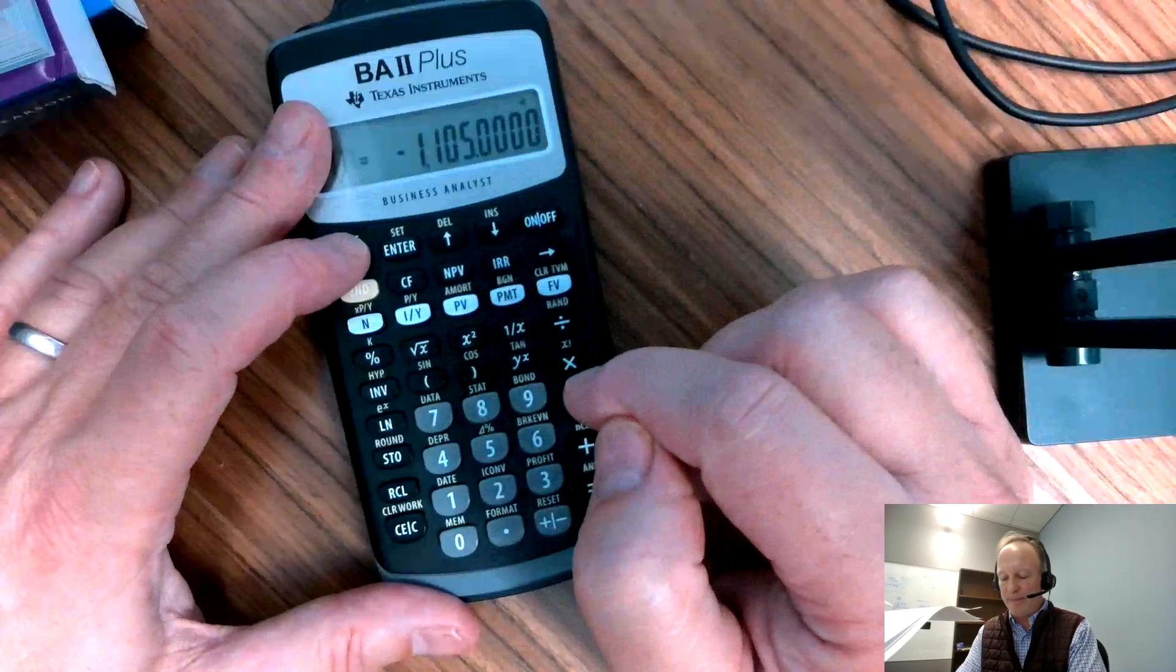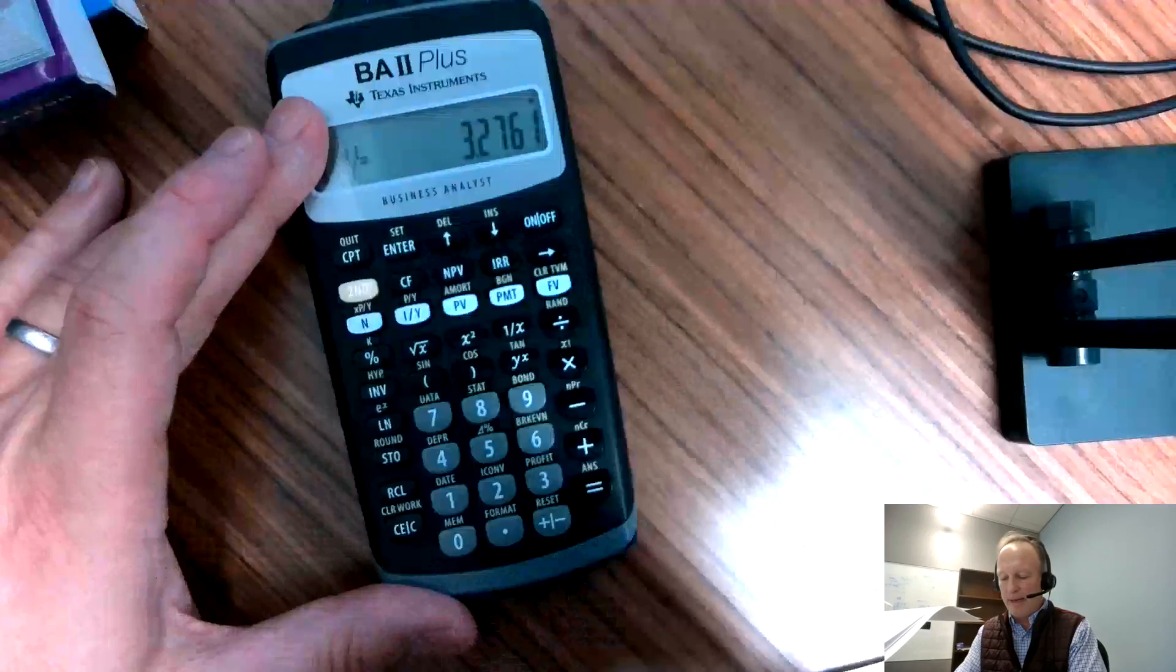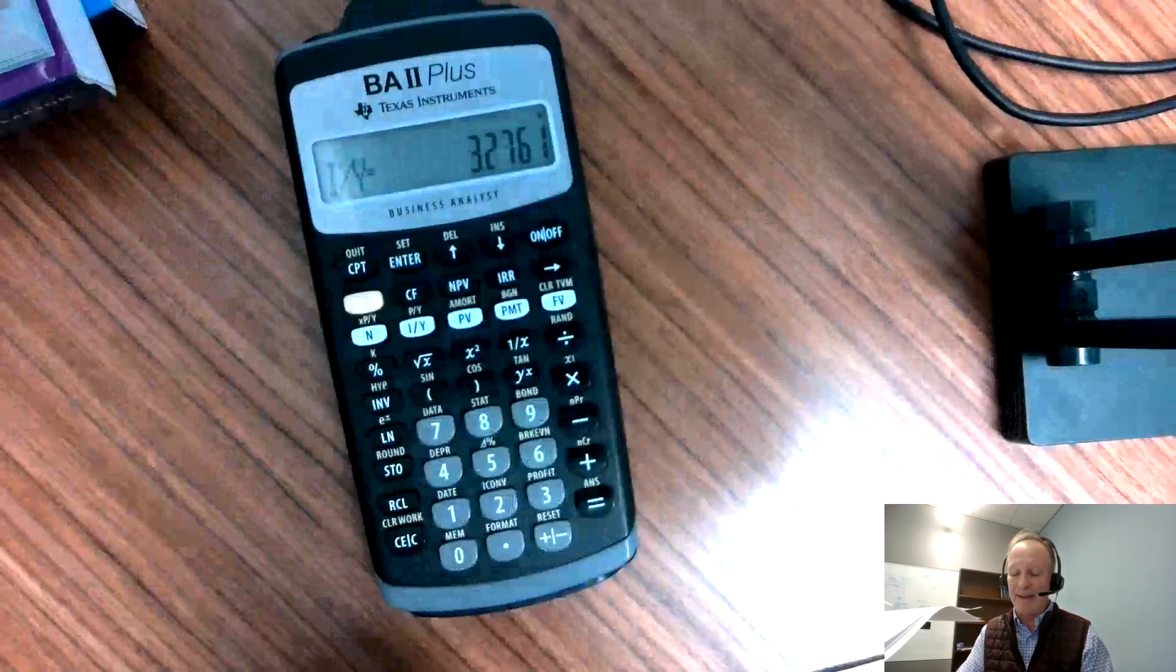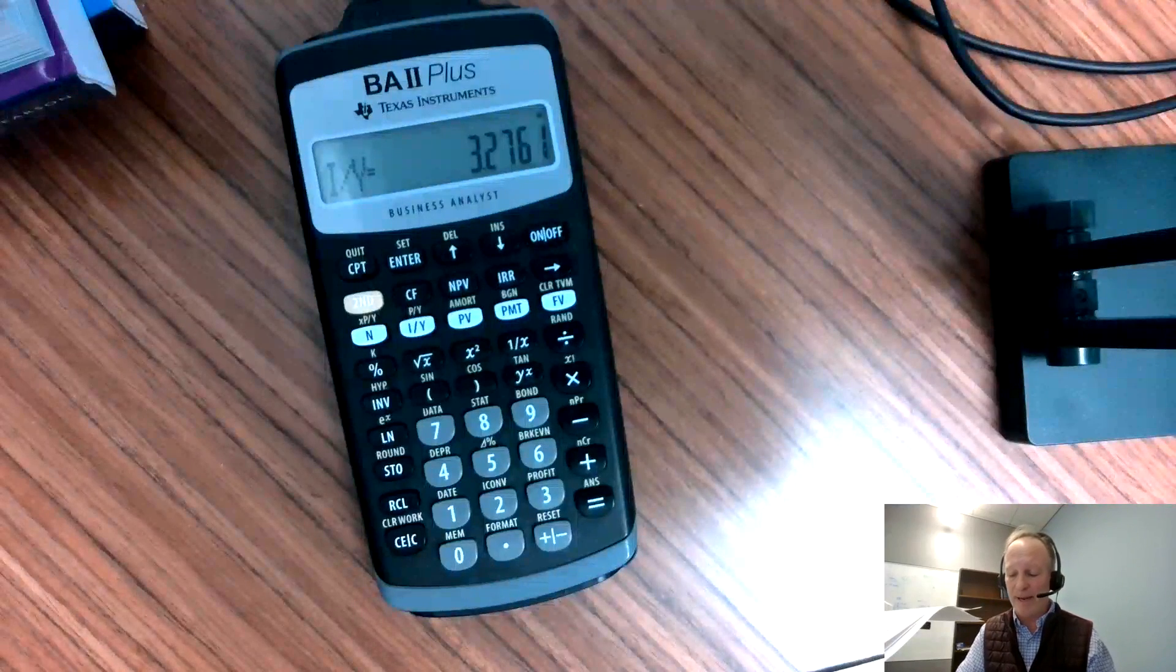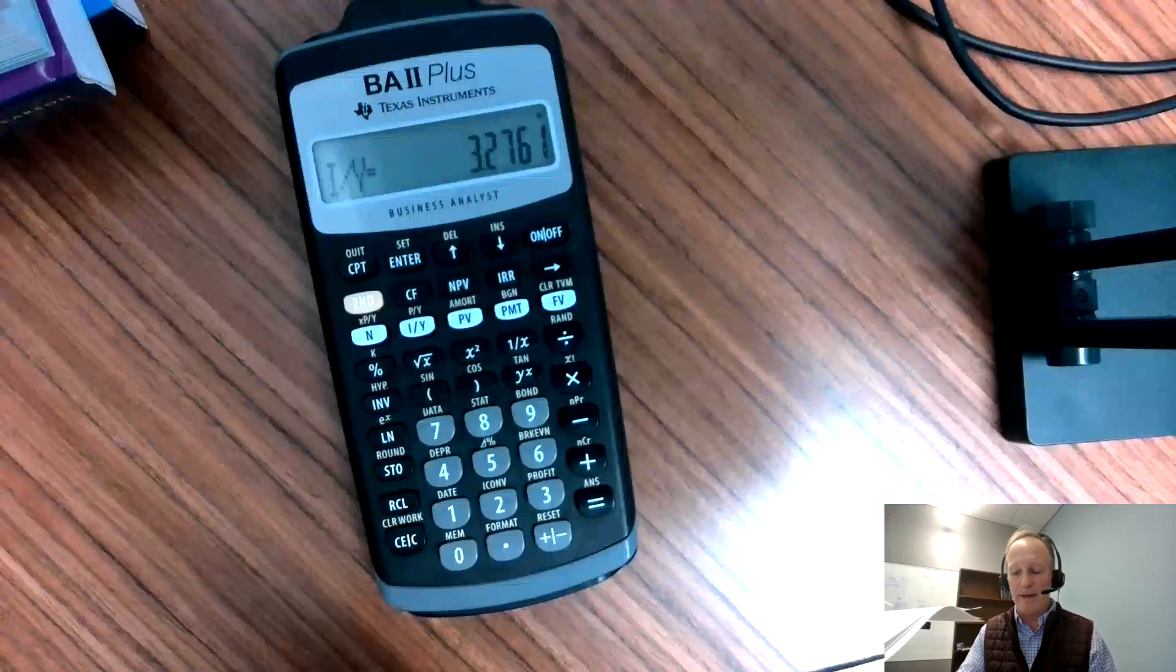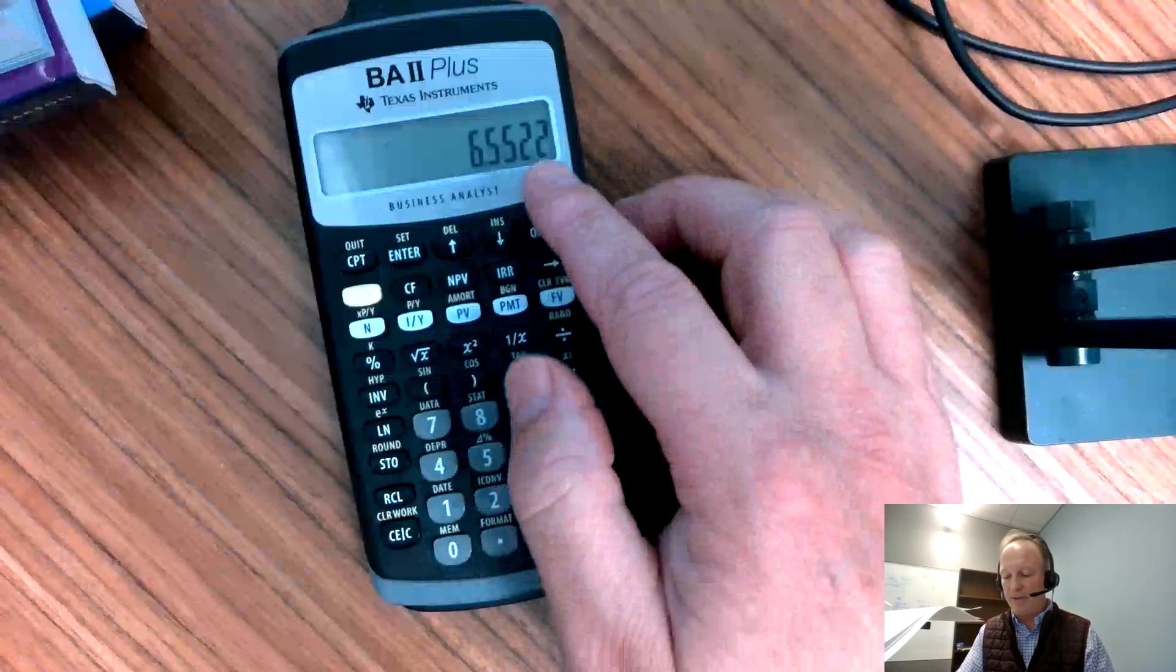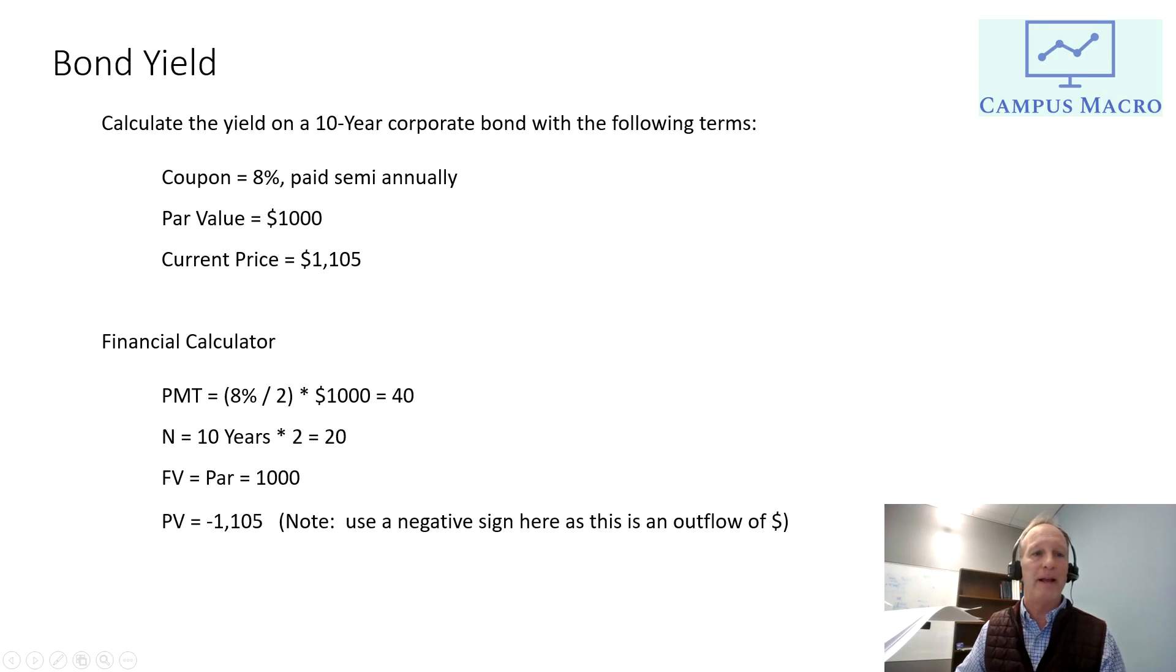And now I just hit compute CPT I/Y. And I get a number that's 3.276. Now, that is a semi-annual yield because I've done this in semi-annual space. So what I need to do is multiply that by 2. And so I just would go times 2. And that gives me number 6.55. That's my yield to maturity. You got to make sure you do that last step there. My yield to maturity is 6.55%. All right.